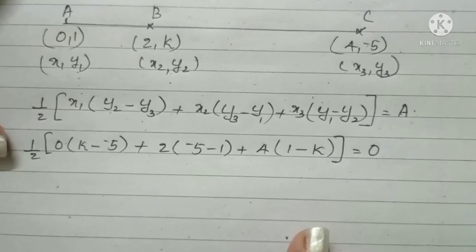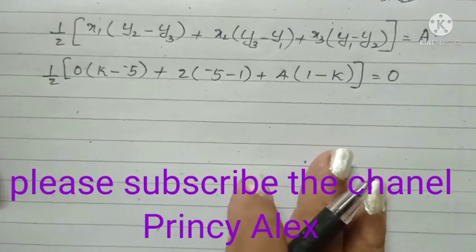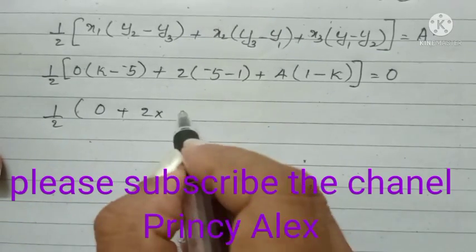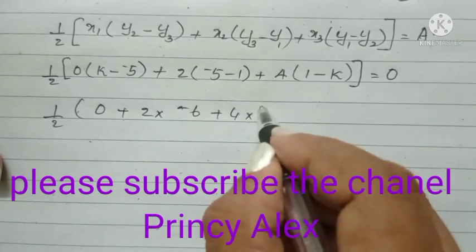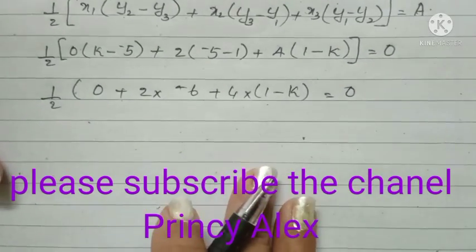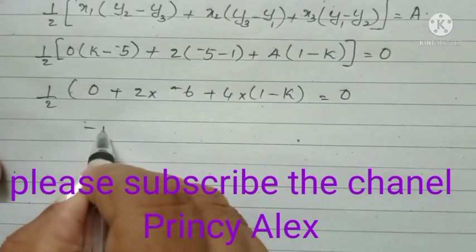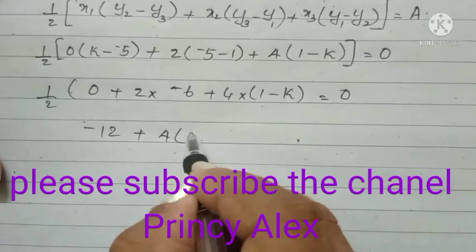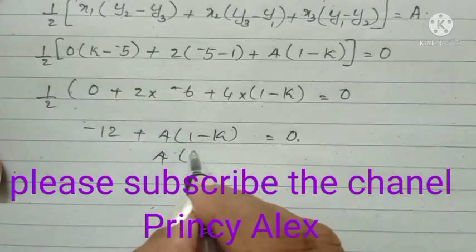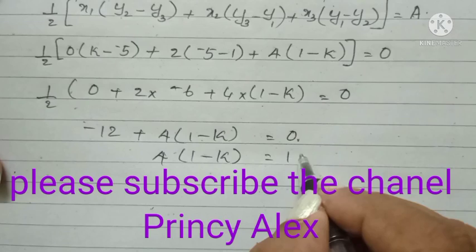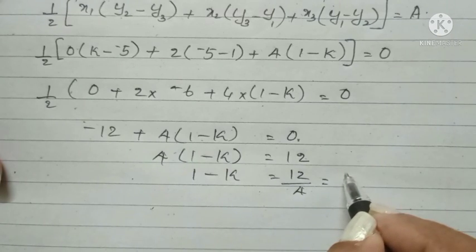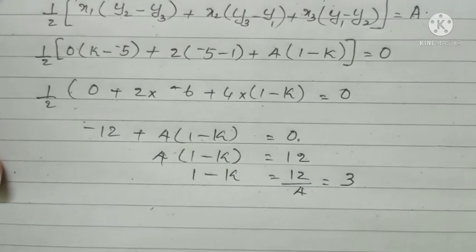Since it is collinear, their area will be 0. Therefore, first term will be half into 0 plus 2 into minus 6 plus 4 into 1 minus k equal to 0. 2 and 0 is multiplying, it will be 0. Then, 2 into minus 6 is equal to minus 12 plus 4 into 1 minus k cross multiplying. We will get 0. We are taking 12 to the other side. 4 into 1 minus k equal to 12. 1 minus k equal to 12 divided by 4 equal to 3. k equal to minus 2.